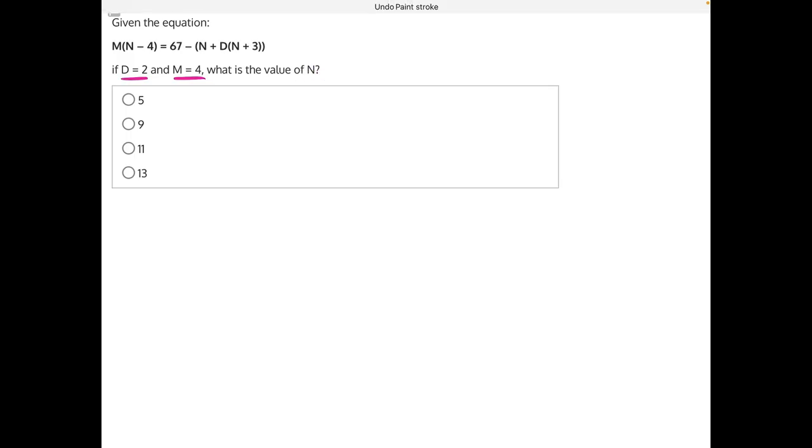So let's start by making those substitutions. We have m, which we know is equal to 4, times n, our unknown variable, minus 4 is equal to 67 minus n, again unknown, plus d, which we know is 2, times n, our unknown, plus 3.